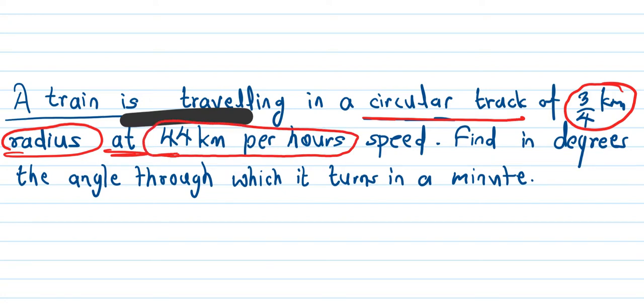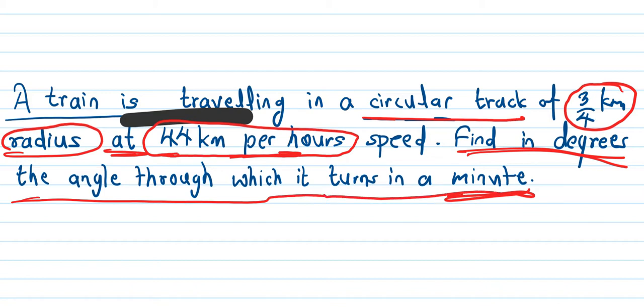Find in degrees the angle through which it turns in a minute. One minute, each minute, how much does the train turn? Find in degrees.